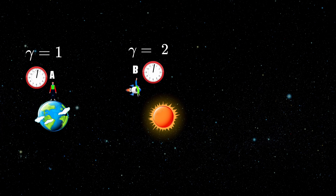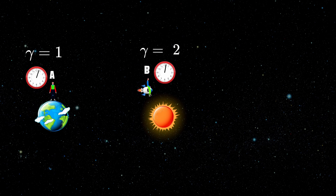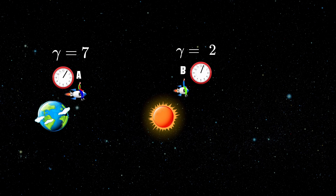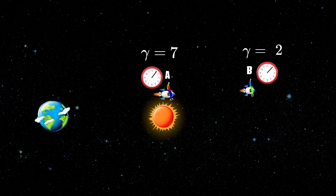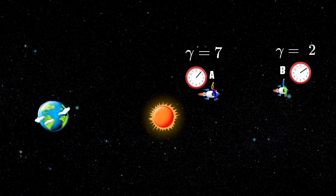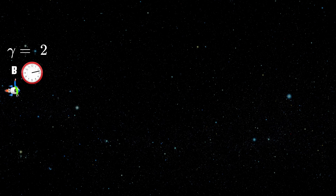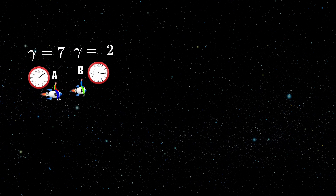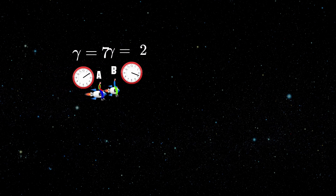You could also leave observer B inertial, so observer A would have to accelerate to catch up to observer B — in that case observer A would be younger, and the math would adapt perfectly. But despite all of this, it would be a shame to leave this as the full explanation. It feels like not the whole story was told.